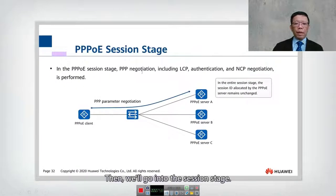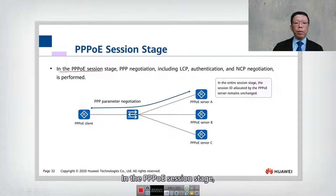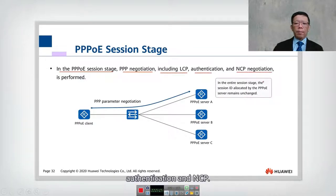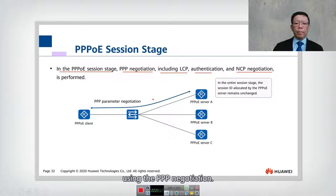In the PPPoE session stage, PPPoE negotiation takes place, which includes the Link Control Protocol, authentication, and NCP — the Network Control Protocol. This is the PPP negotiation process we studied previously.